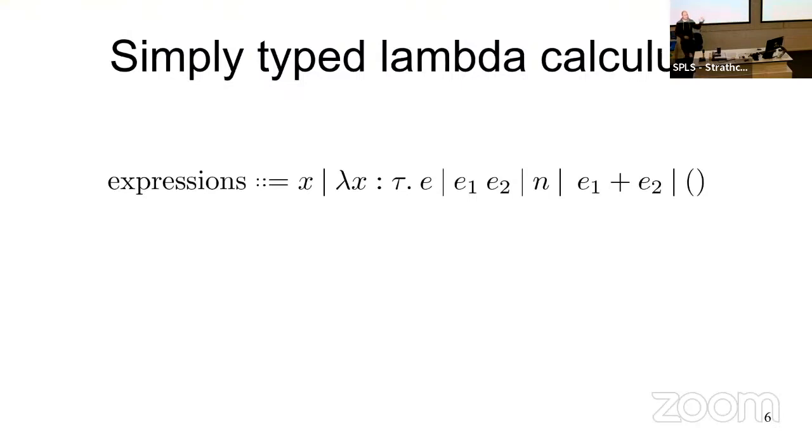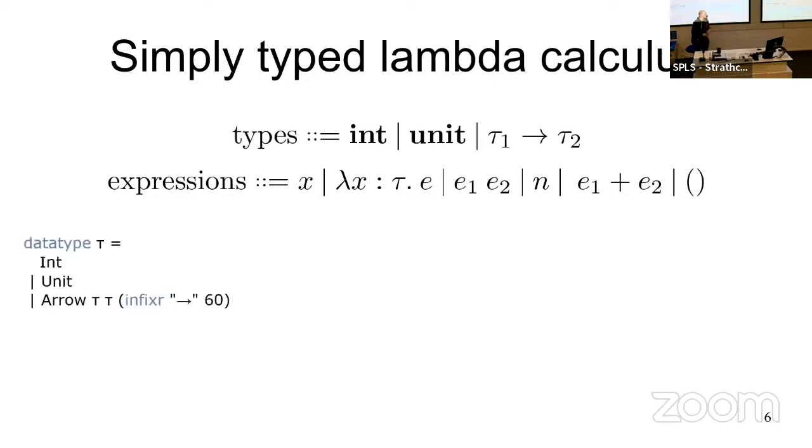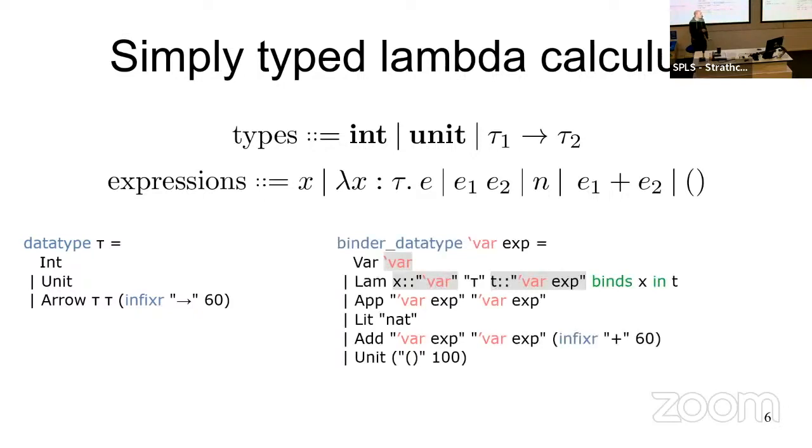To get on with the topic of datatypes with binders. If we have our example of simply typed lambda calculus, we would like to express that it has this binder in there. Types have no scoping around, so we can just use an ordinary data type. The new thing is where this binder comes in. I'm working on this new binder datatype command. It allows you to define a data type similar to ones Isabelle already has, but that allows you to specify these binding relations directly as part of the data type. Here, I give this lambda binder a name and this inner thing a name, and I can just say, please bind this x in t.